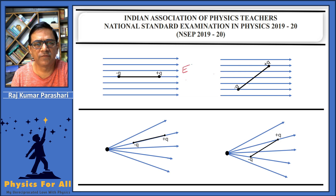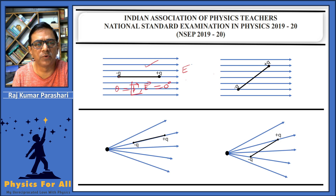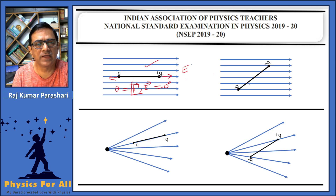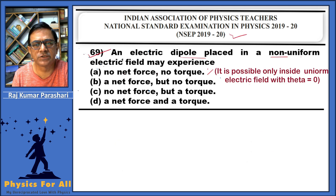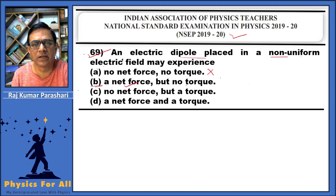You know, when an electric dipole is placed inside a uniform electric field, as shown here, the angle between the p vector and E vector is zero. In such a situation, the net force on the dipole happens to be zero and the torque is also zero. This can occur only inside a uniform electric field, and hence option A is incorrect.